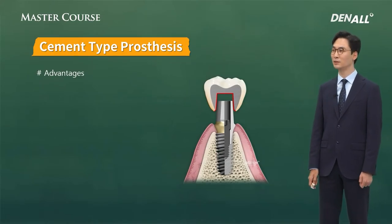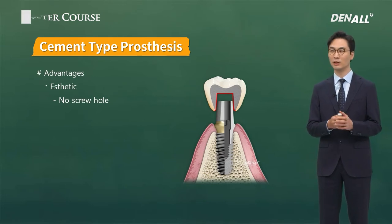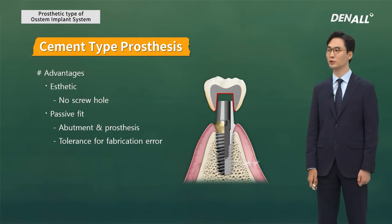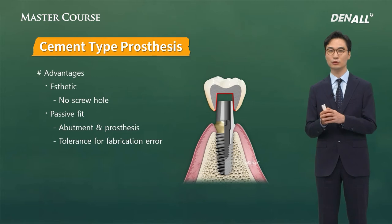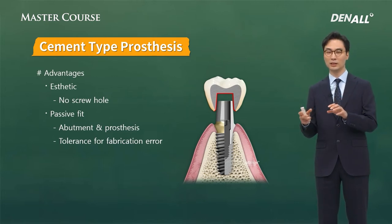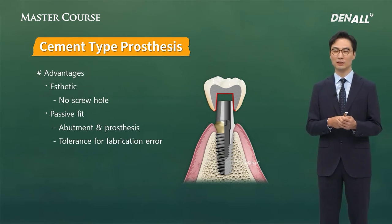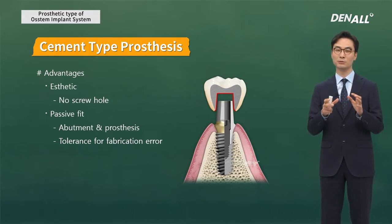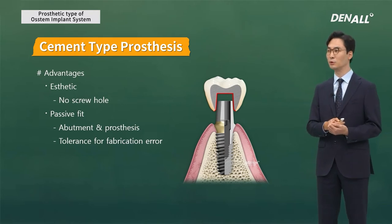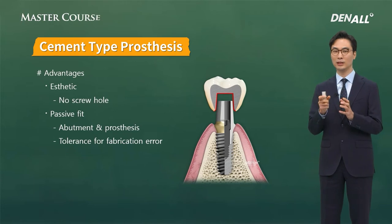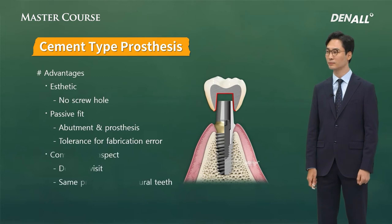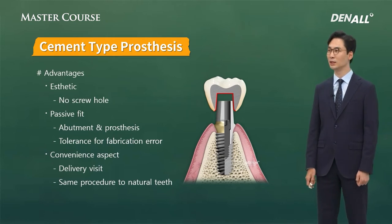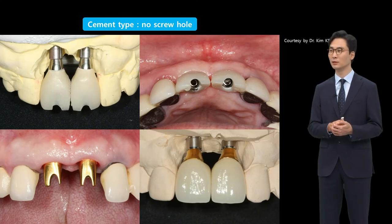Second is cement type. It has many advantages: there is no screw hole, so it is very aesthetic. The process of providing prosthesis is the same as with natural teeth, making it very convenient. Compared to screw type, it is easier to get passive fit. The compatibility of the abutment and the suprastructure can be checked separately. In screw type, if something doesn't fit, it's hard to isolate the issue — but with cement type, abutment and suprastructure fit can be verified independently. The biggest advantage of cementation type is its aesthetics.